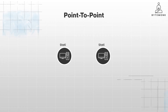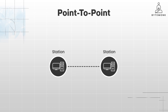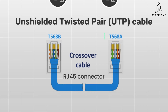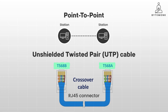Point-to-point is the simplest form, connecting only two devices directly with a single link — cable or wireless. This is common for direct connections between computers or a device like a printer. The most common type of cable used here is UTP, or unshielded twisted pair cable, which consists of multiple pairs of copper wire twisted together to reduce interference. Each end of the UTP cable is fitted with an RJ45 connector — the standard plug that fits into Ethernet ports on devices like computers and routers, with eight metal pins. T568A or the more common T568B is the wiring standard that dictates the specific order in which the colored wires are connected to the pins on the RJ45 connector, ensuring compatibility and reliable communication between devices.